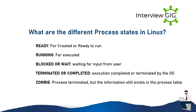What are the different process states in Linux? Ready: created or ready to run. Running: being executed. Blocked or Wait: waiting for input from the user. Terminated or Completed: execution completed or terminated by the OS. Zombie process: terminated, but the information still exists in the process table.